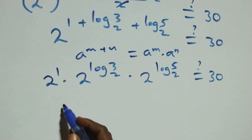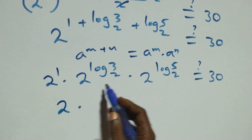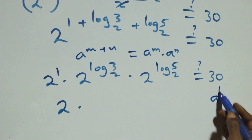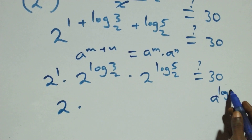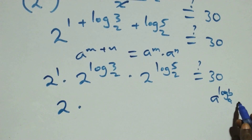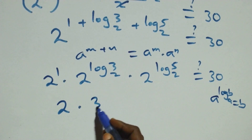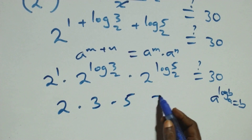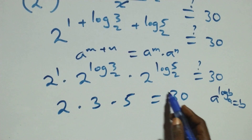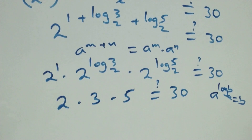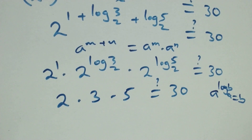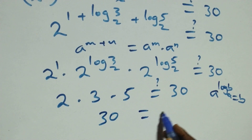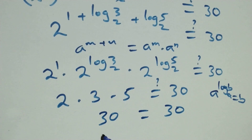Then 2 raised to power 1 is 2. We apply the rule: a raised to power log_a(b) equals b. So 2 raised to power log₂3 is 3, and 2 raised to power log₂5 is 5. We have 2 times 3 times 5: 2 times 3 is 6, and 6 times 5 is 30, which equals 30. Left hand side equals right hand side.